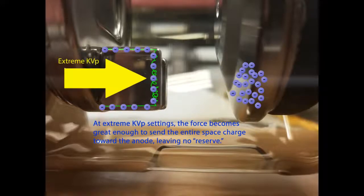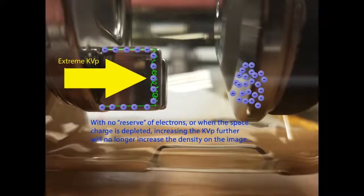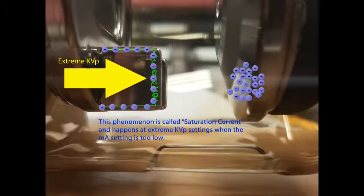At extreme KVP settings, the force becomes great enough to send the entire space charge toward the anode, leaving no reserve. With no reserve of electrons, or when the space charge is depleted, increasing the KVP further will no longer increase the density on the image. This phenomenon is called saturation current, and happens at extreme KVP settings when the mA setting is too low.